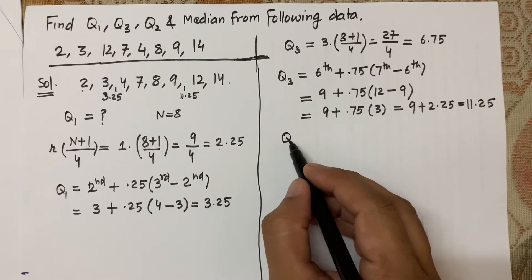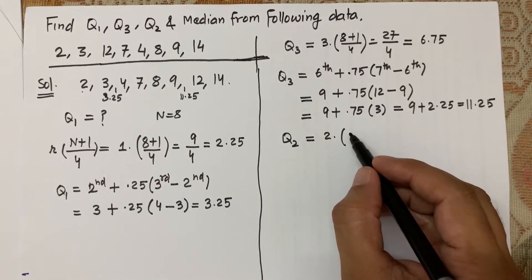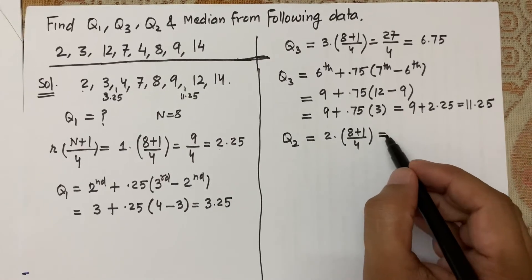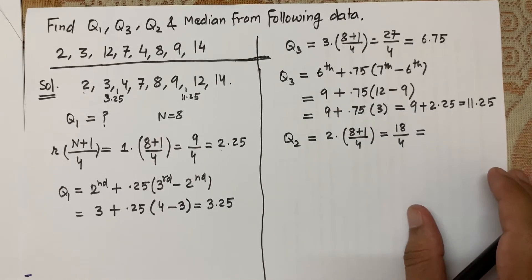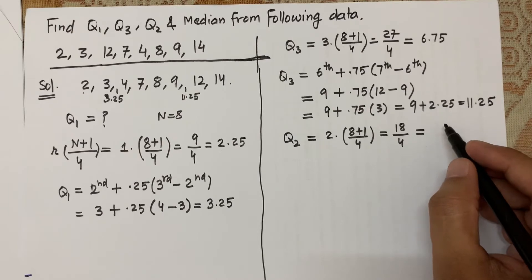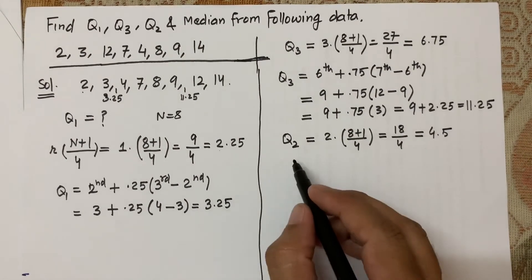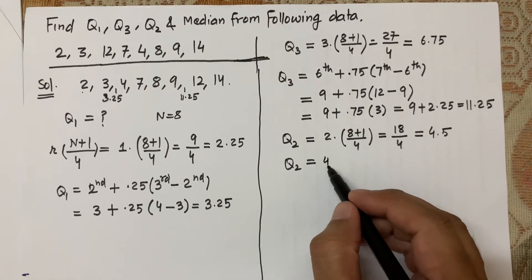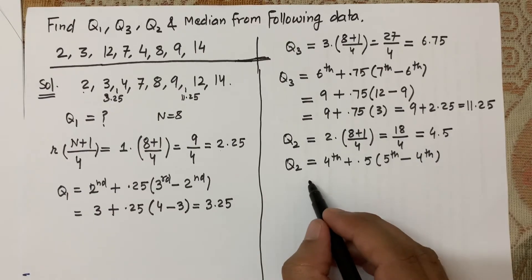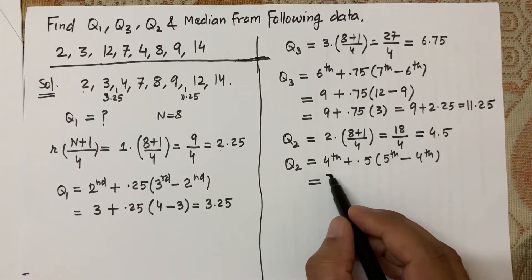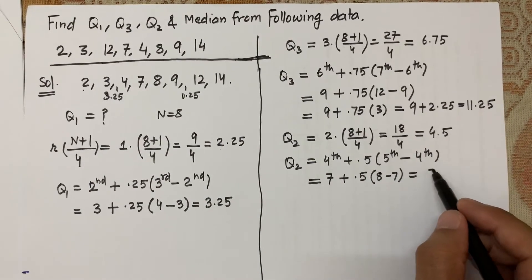Now let's calculate Q2, where r becomes 2: 2 × (8+1)/4 = 18/4 = 4.5. So Q2 falls between the 4th and 5th observations. Q2 = 4th observation + 0.5 × (5th observation − 4th observation). The 4th observation is 7 and the 5th is 8, so Q2 = 7 + 0.5 × (8 − 7) = 7.5.